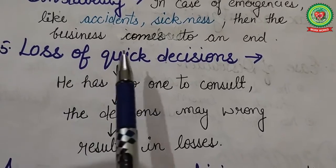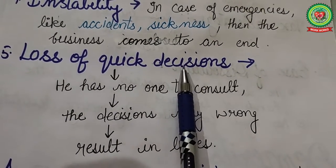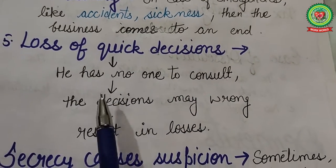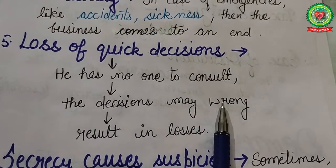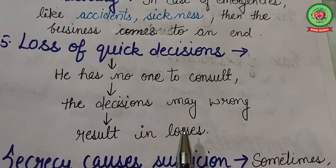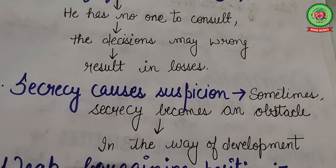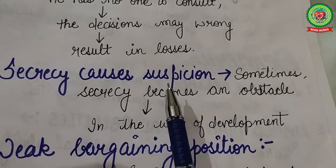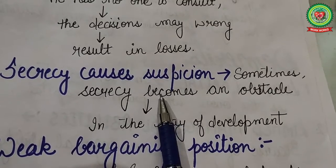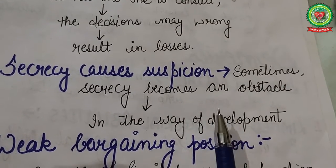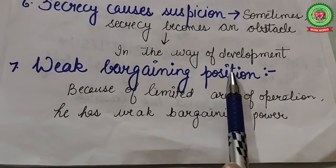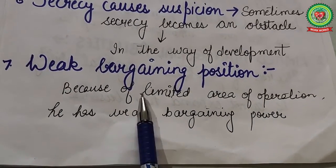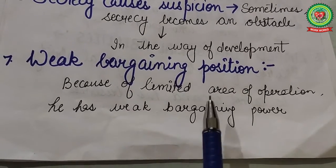Next is loss of quick decisions — although the sole trader is able to take quick decisions, he has no one to consult, so decisions may go wrong and result in losses. Next is secrecy causes suspicion — while the trader is able to keep business secrets, sometimes secrecy becomes an obstacle in the way of business development. Next is weak bargaining position — because of the limited area of operation, the sole trader has weak bargaining power with customers.